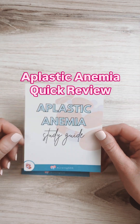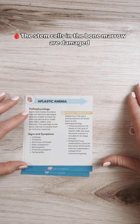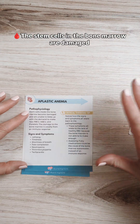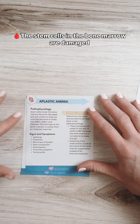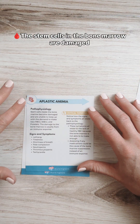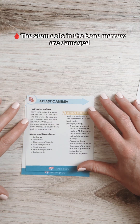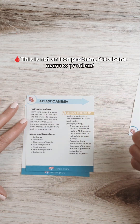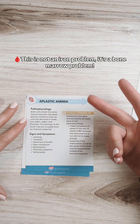Let's walk through a study guide for aplastic anemia. During aplastic anemia, the stem cells inside the bone marrow are damaged, and they're not able to keep up with the body's demands of making blood cells — including red blood cells, white blood cells, and platelets.